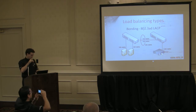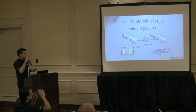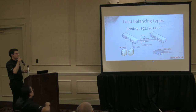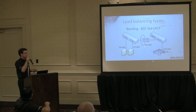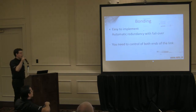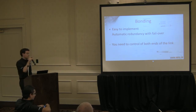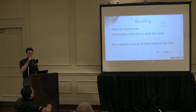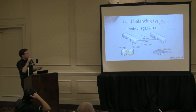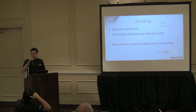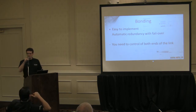With bonding, it's really easy. For example, if you have a server with a gigabit connection and you only have a switch with a 100 megabit connection in between, you can bond these 200 megabit connections to get an aggregate 200 megabit throughput. It's really easy to implement and it's got automatic redundancy with automatic failover. The only downside is that you need control of both ends of the link, because it uses LACP or some other protocol, and that's not useful if you are taking internet from your ISP.